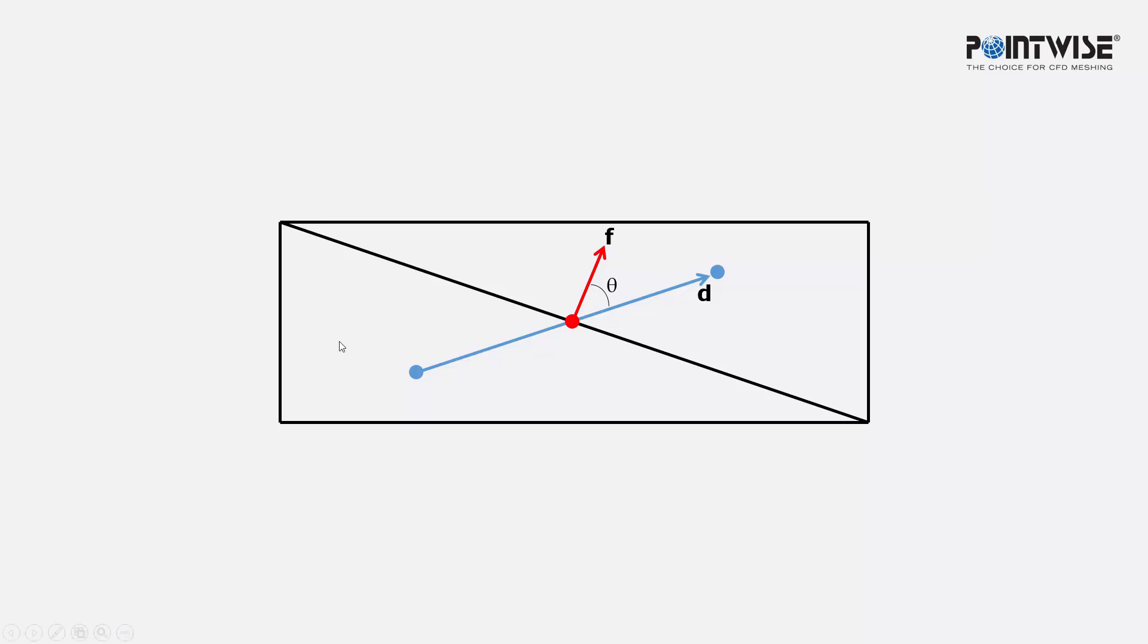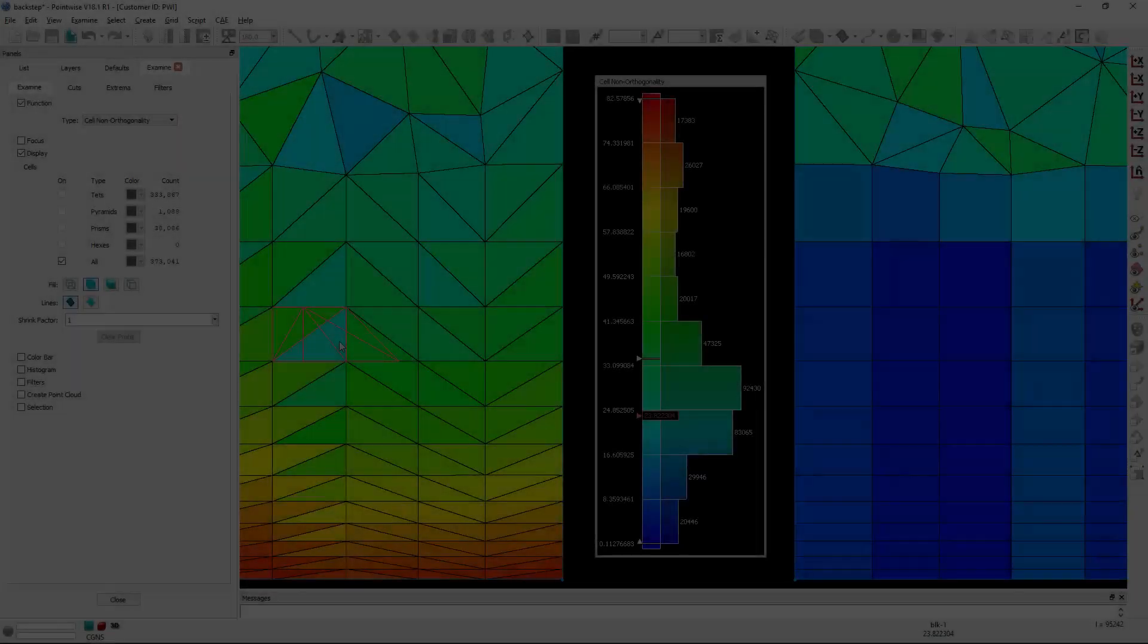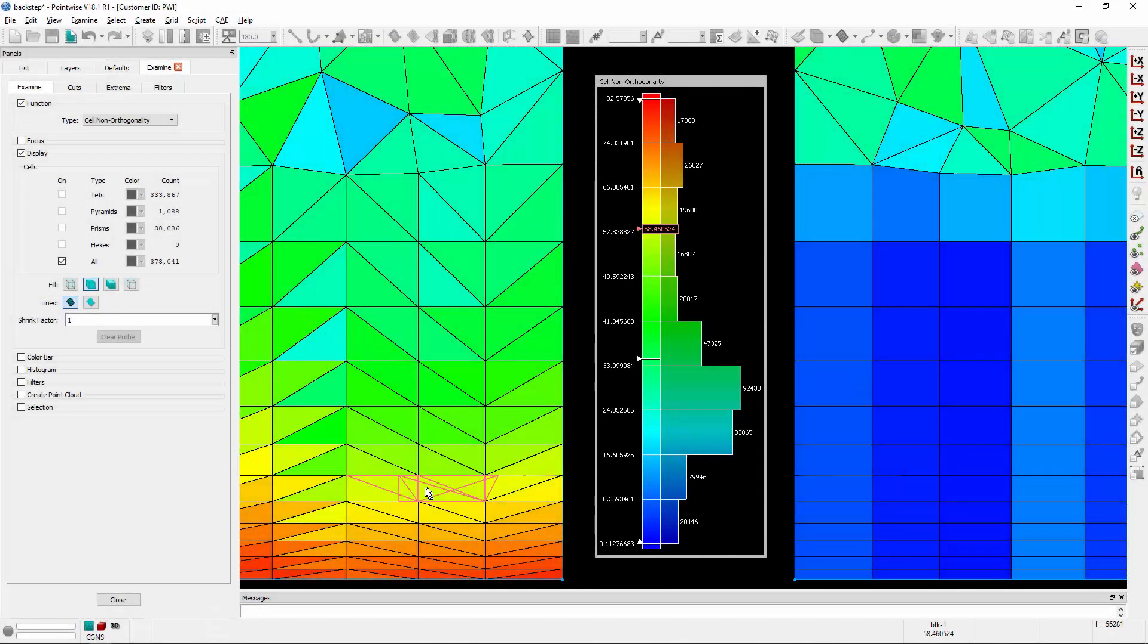So let's go ahead and open up PointWise and show you how this is computed. So here we are in PointWise. We're looking at two meshes. On the left, we have an isotropic tetrahedral mesh generated by T-Rex. And on the right, we actually have the same mesh. However, those right-angle tetrahedra have been combined into prism elements,